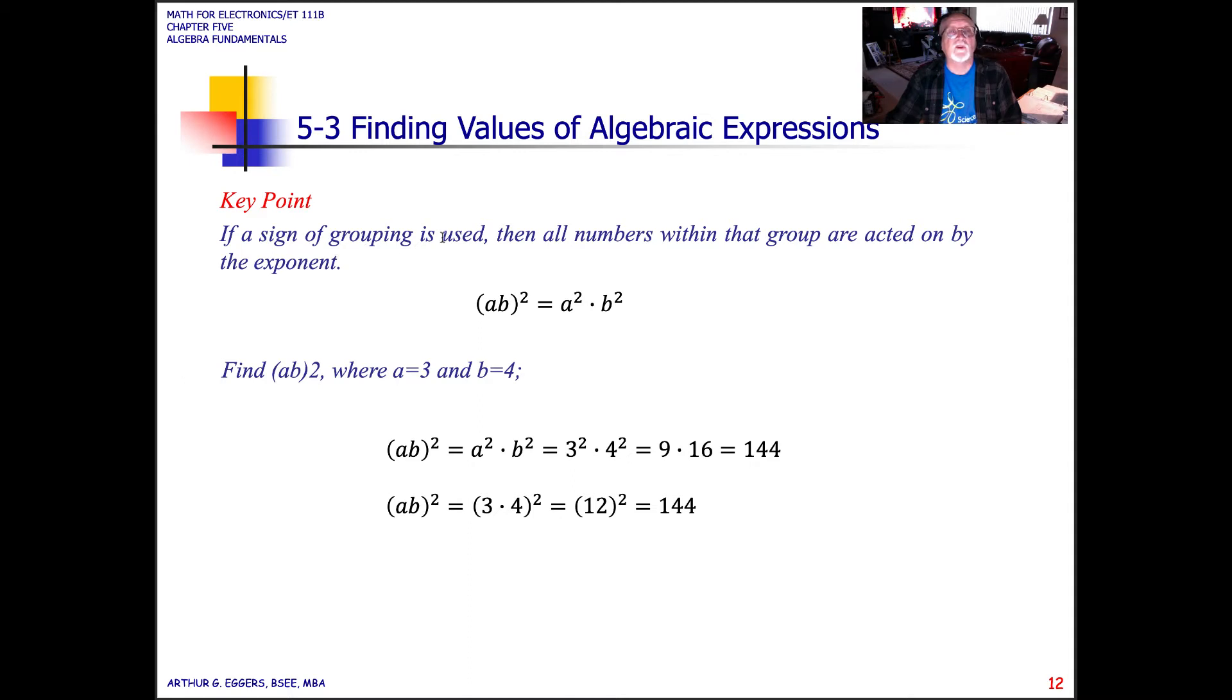Key point, if a sign of grouping is used, then all the numbers within that group are acted on by the exponent. In this case, you can see we have a, b, both terms inside parentheses squared. So it becomes a squared times b squared. If we identify values of a equals 3 and b equals 4, we make the substitution: 3 squared times 4 squared gives us 9 times 16 or 144. We can also solve what's inside the parentheses first. 3 times 4 is 12, square it, and we come up with the same value. Sometimes it's easier to solve that way.